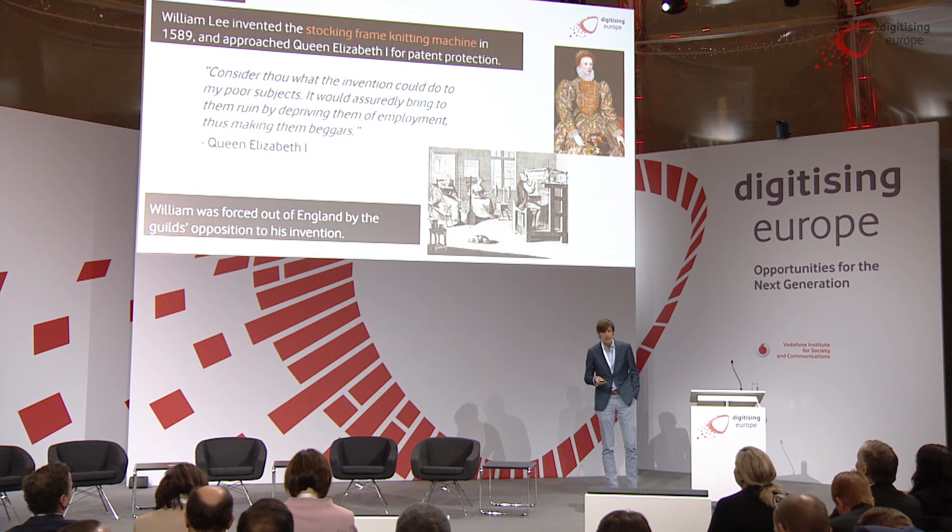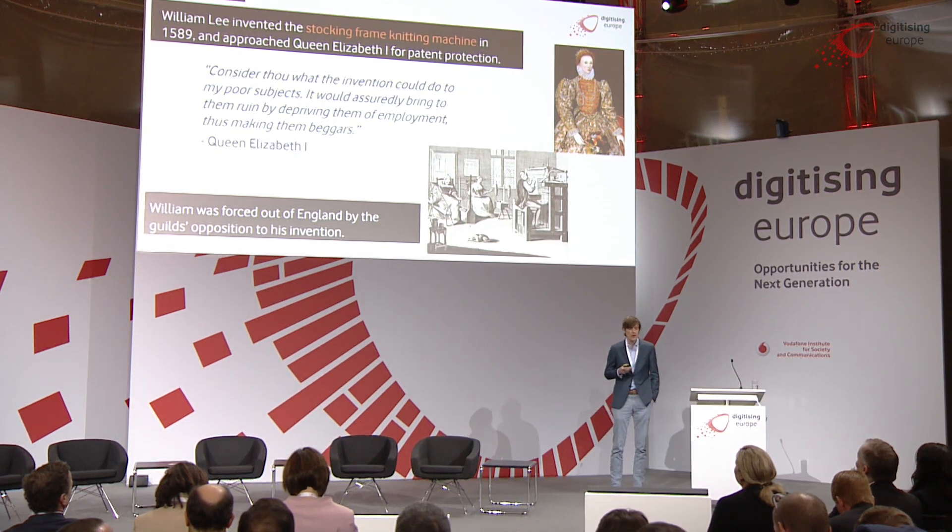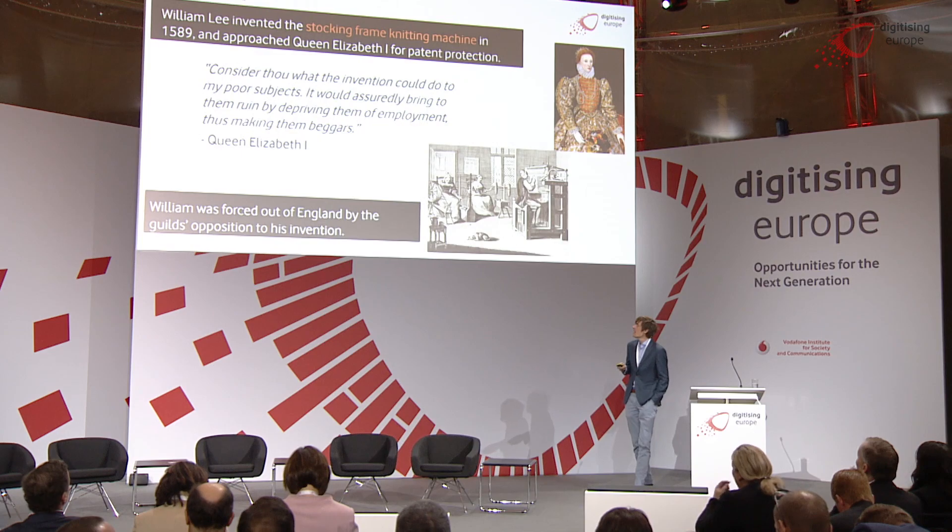Before that, I'd like to talk about the history of employment. Cast your mind back to the year 1589 when a gentleman by the name of William Lee, an Englishman, invented the stocking frame knitting machine, a device essentially designed to automate the process of knitting and weaving. He approached the monarch of England, Queen Elizabeth I, for patent protection, only to be turned down. The objection the Queen had was exactly that of technological unemployment — she was concerned about the impact of this technology on the livelihood of her subjects.